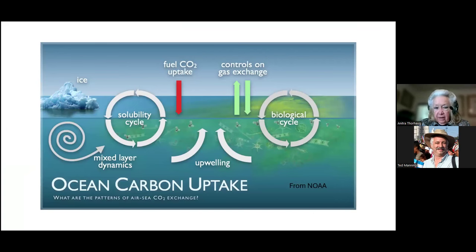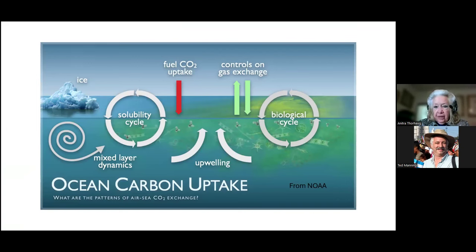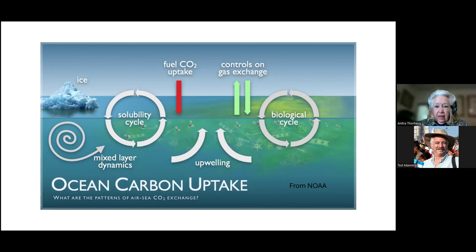First of all, when fossil fuel is metabolized — burned — it goes into the air, but then a portion of it is stored in the ocean. That's on a gas exchange basis that it enters the ocean, which you see here in this illustration in green. There are ways the ocean pushes this around by upwelling, biological cycles, and mixed layer dynamics.